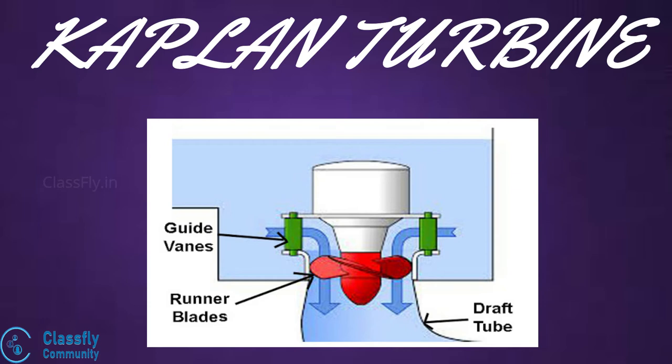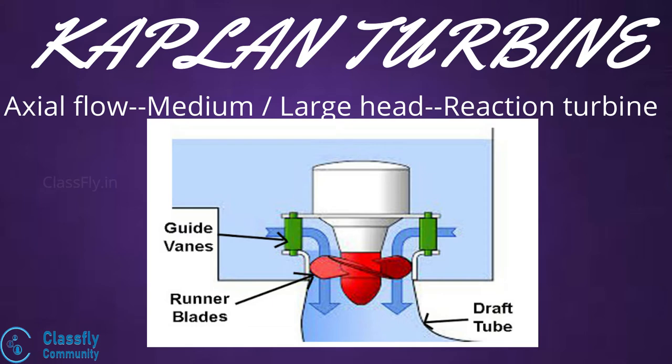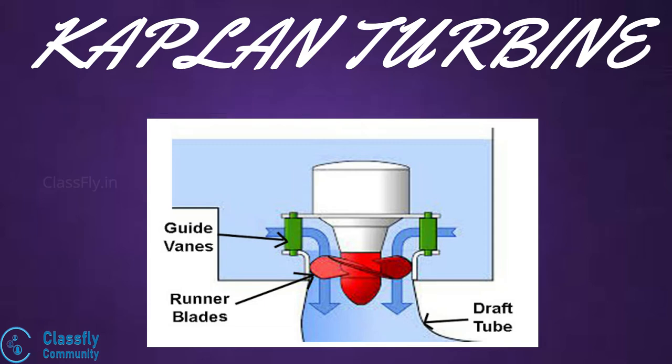The Kaplan turbine was designed by Sir Viktor Kaplan. It is an axial flow reaction turbine, similar to the Francis turbine, except that the runner receives water axially. The turbine consists of a device called the hub or boss, which is fixed to the vertical shaft. The runner blades are attached to this hub and are also adjustable.